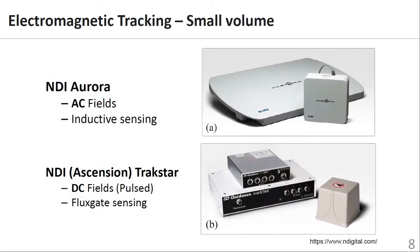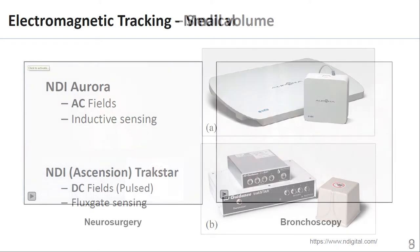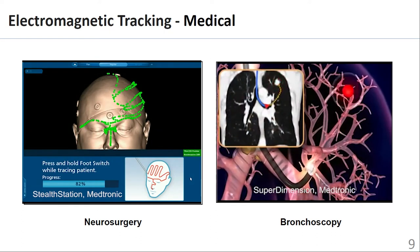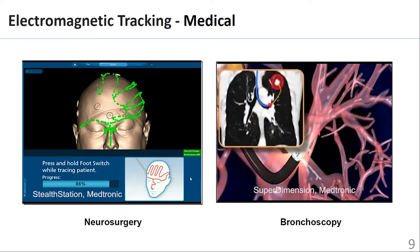Tracking systems such as the Aurora and TrackStar are capable of tracking much smaller magnetic sensors in the order of millimeters in size. The Aurora sensors operate on passive magnetic induction while the TrackStar utilizes active flux gate sensing technology. The smaller sensors and tracking volume make them suitable for medical navigation applications.